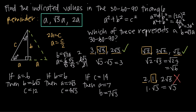The important thing to remember is that because this is a right triangle, you can always fall back on the Pythagorean theorem if you don't remember the special relationship. But for the shortcut with the 30-60-90 triangle — which is half of an equilateral triangle — remember that A is the shortest leg, the longer leg is √3 times A, and the hypotenuse is always 2A.